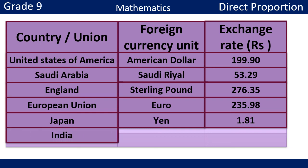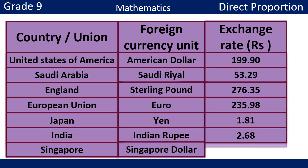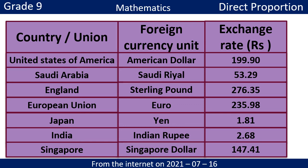Continuing with exchange rates: one Indian rupee is 2 rupees 68 cents. One Singapore dollar is 147 rupees 41 cents. This information is from the internet dated 2021 July 16th, October 13th.